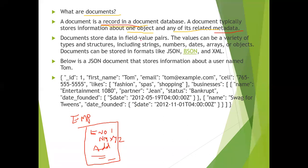A document stores data in the form of field-value pairs. For example: ID equals 1, first name equals Tom, email address equals Tom, cell number. Here, ID and first name are called keys, and 1 and Tom are called values. In a document, we store information in the form of key and value pairs.